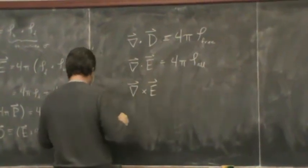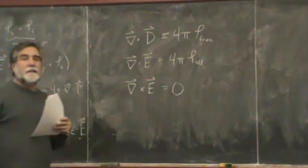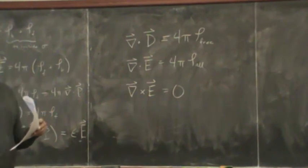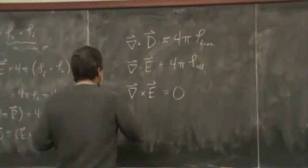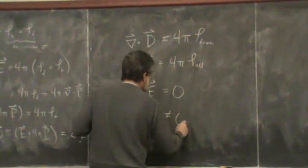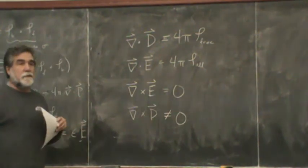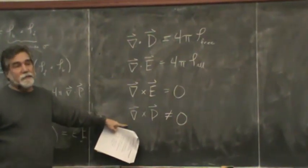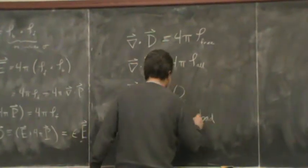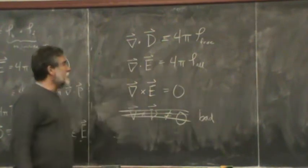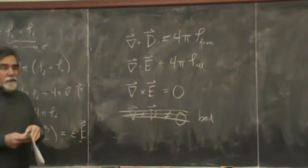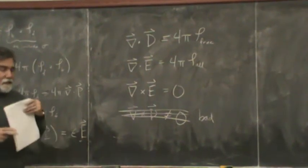The curl of the electric field is zero. I'm not going to prove it, but there are circumstances that can easily be found where the curl of the D field is not equal to zero. So this is a bad relationship to use. These, under various circumstances, might be good, useful relationships to use. But it will depend upon the details of the circumstances.